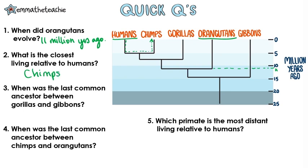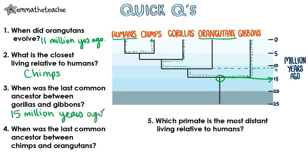Three: when was the last common ancestor between gorillas and gibbons? To do this we read down until the branches meet — you can't go back up, you just have to keep reading down and across. We find out that they had a common ancestor around 14 or 15 million years ago.